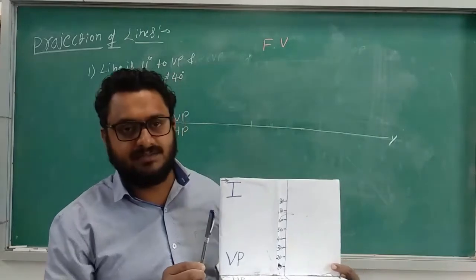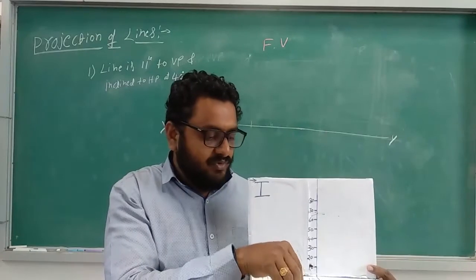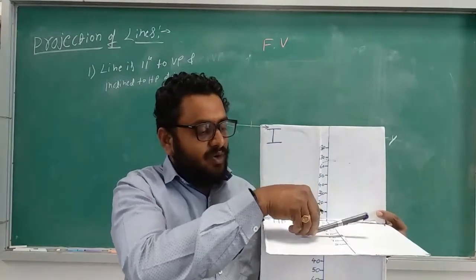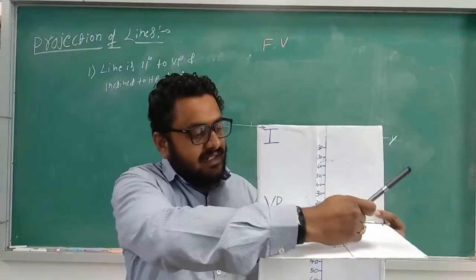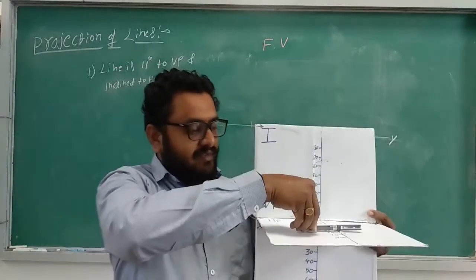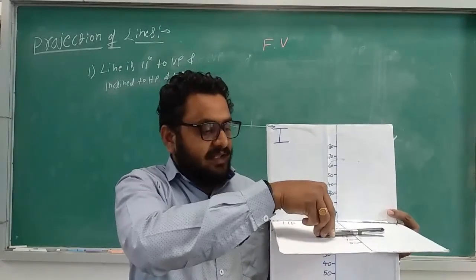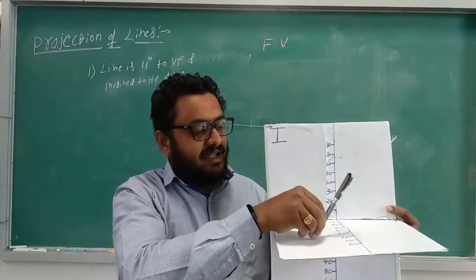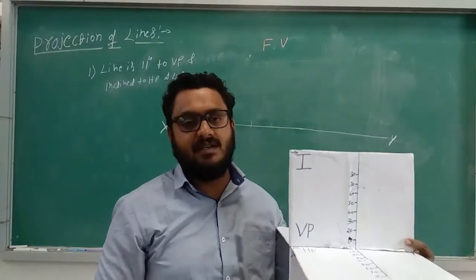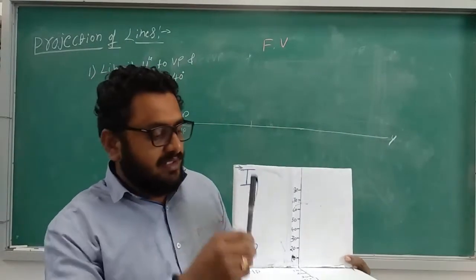As we know, when the line is kept parallel to a plane, we get the true length in that view. So the front view will show the true length. In the top view, initially it has the true length, but as we keep inclining the line, the length keeps reducing. This reduced length is known as the apparent length — when we make inclination to any plane and keep increasing the angle, the true length keeps reducing to become apparent length.